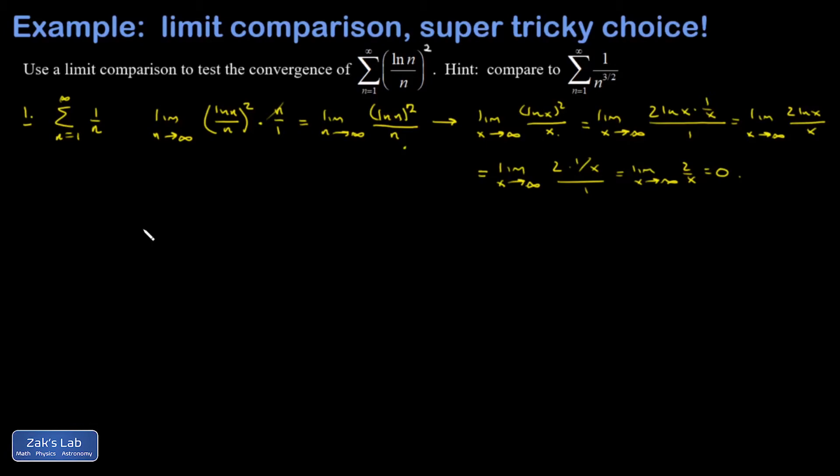Now, unfortunately, we can't conclude anything from this because we took the ratio of the terms of our series to the terms in a divergent sequence. And we found out in the large n limit that goes to zero.